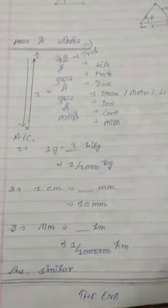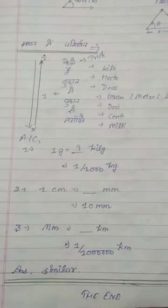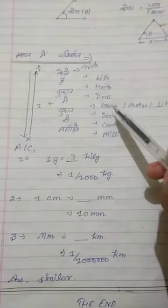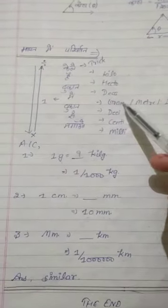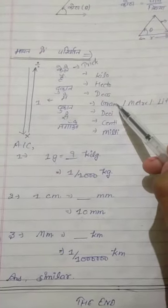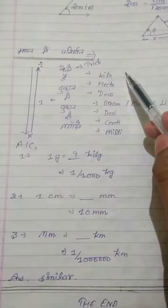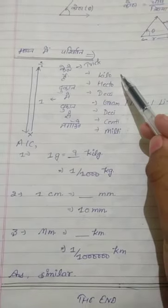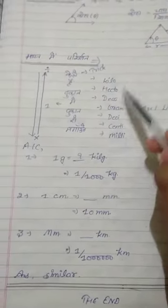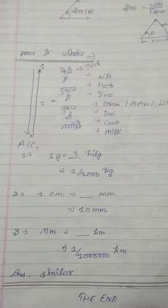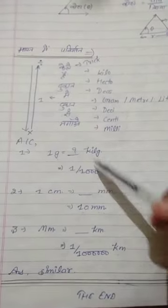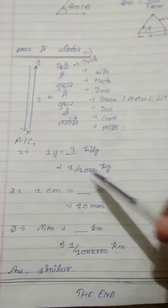For example, one gram is equal to how many kilograms? We find where gram is in this trick. Gram is here. We go to kilogram from below, so we divide. How much? 1, 2, 3. We divide by 1000. So, 1 gram equals 1/1000 kilogram.